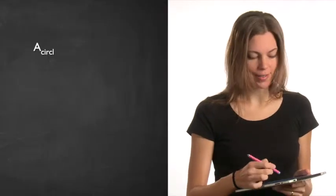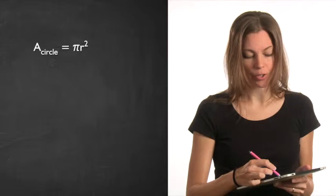It's going to be helpful to remember some basic geometry for this course. One is knowing the area of a circle: the area of a circle is equal to pi r squared.